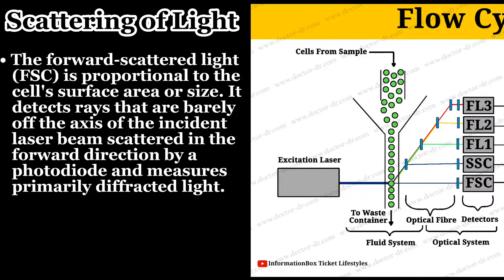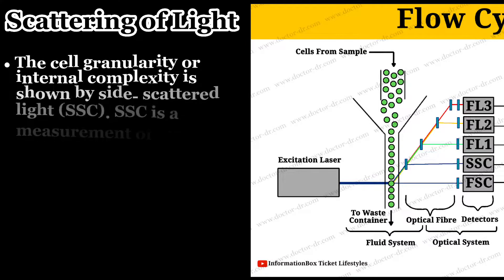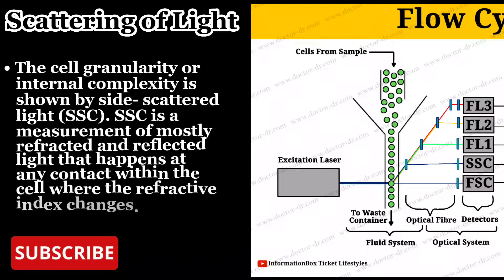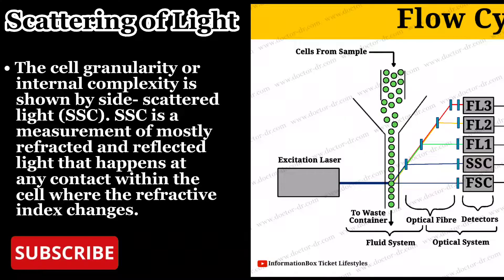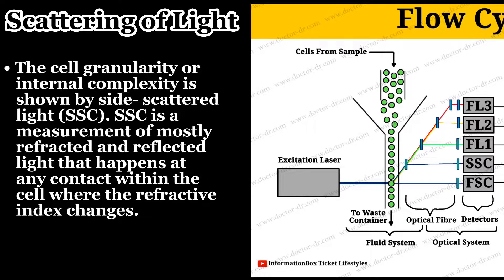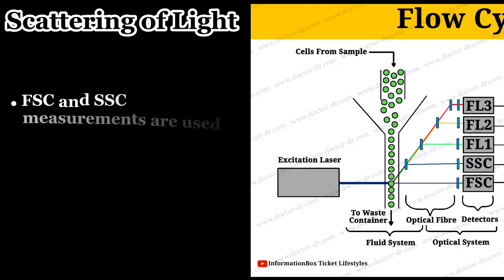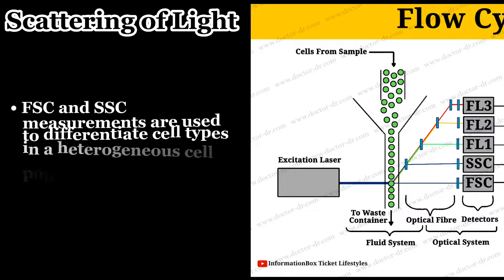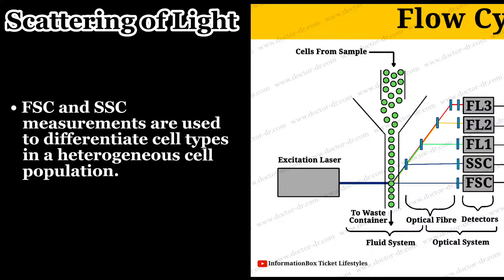The cell's granularity or internal complexity is shown by side scattered light (SSC). Side scattered light is a measurement of mostly refracted and reflected light that happens at any contact within the cell where the refractive index changes. Forward scattered light and side scattered light measurements are used to differentiate cell types in a heterogeneous cell population.